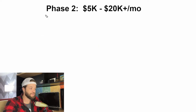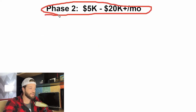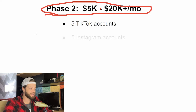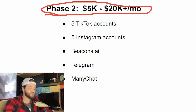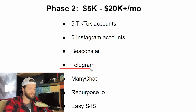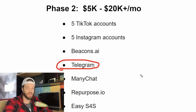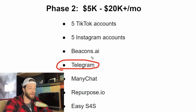Once you're earning $5,000 per month, you can move on to phase two. This is what phase two is going to take: about five TikTok accounts, five Instagram accounts, your Beacons AI, plus some Telegram automation, a system called ManyChat, and a piece of software called repurpose.io — along with Easy Shout for Shout. Telegram is basically a chat app, similar to WhatsApp or Facebook Messenger, but you can build an audience and a community inside it, and then automate the entire process so that Telegram promotes your OnlyFans for you. I have a lot more information about Telegram automation in the description.